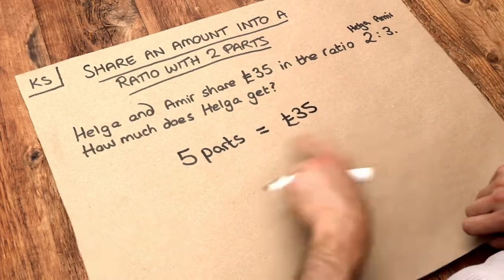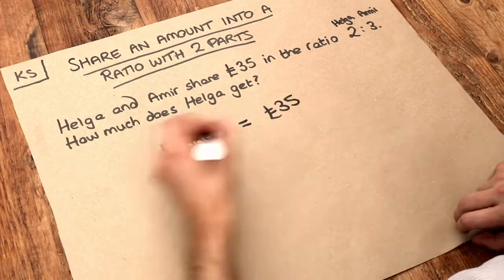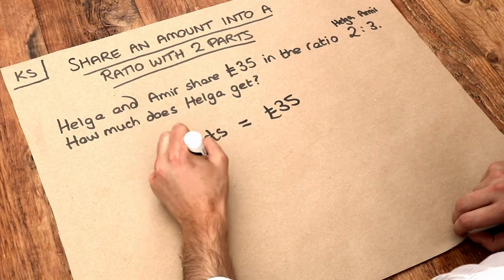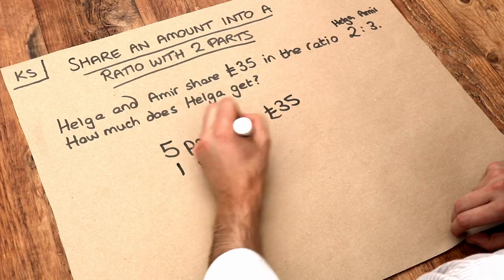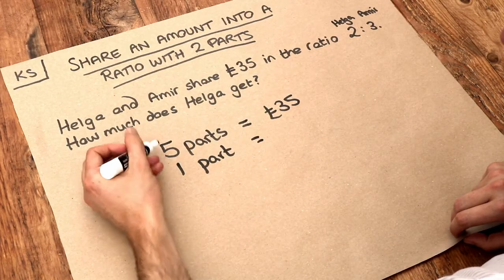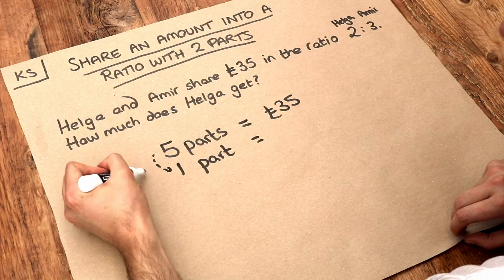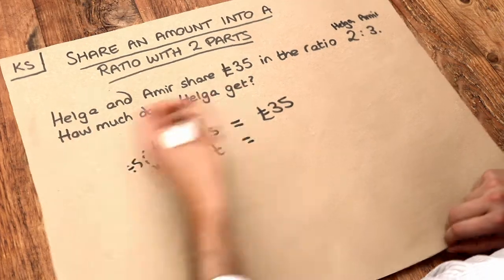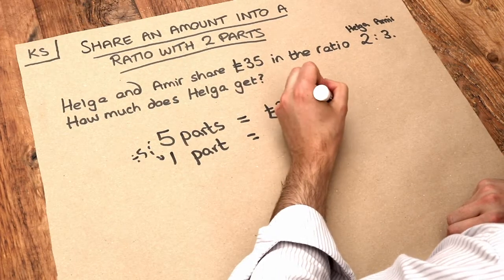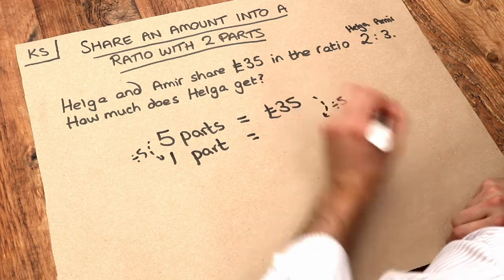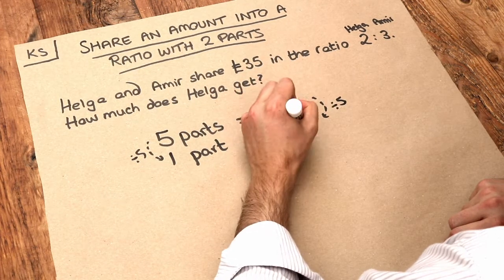From that we can work out what one part is worth. One part — can you see that one part is five times less than five parts? So we have five times less than £35, which is £7.